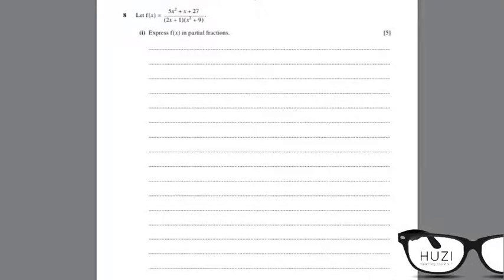Question number 8. Let f(x) equals 5x squared plus x plus 27 over (2x plus 1)(x squared plus 9). Express f(x) in partial fractions.